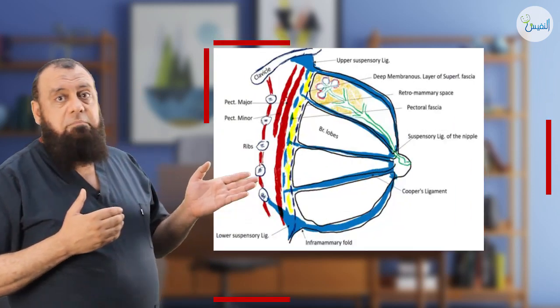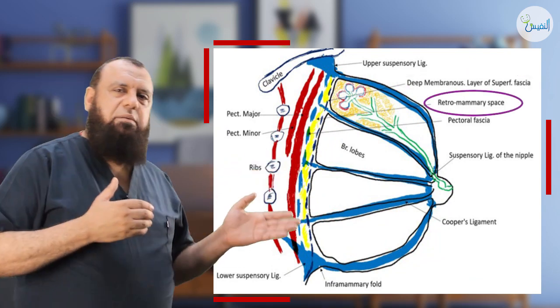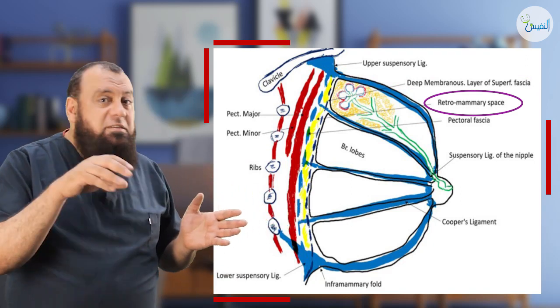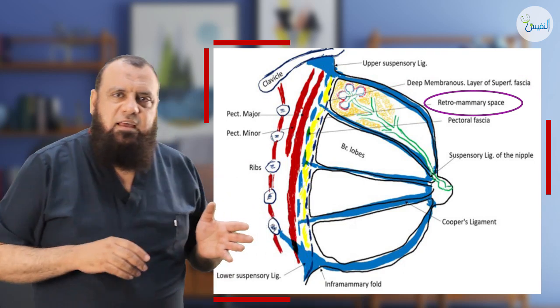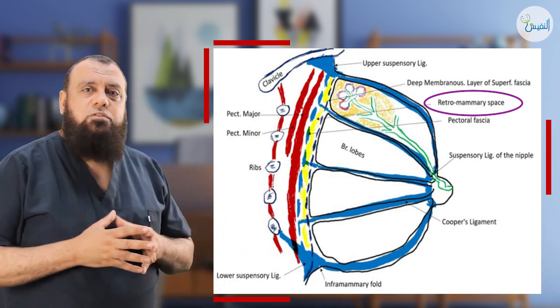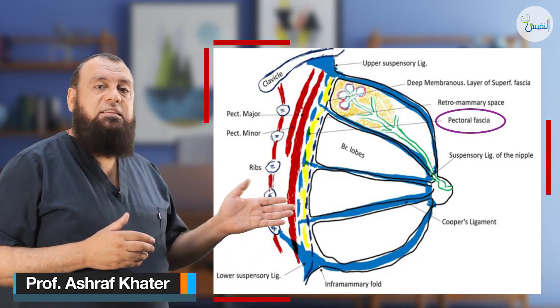Lastly, speaking about the retromammary structures. Behind the breast, there is number one, the deep membranous layer of the superficial fascia, then what we call the retromammary space — a space over which the breast slides over the deeper structures, because it is moving within the retromammary space. This space contains very important lymphatics. Then the pectoral fascia and pectoral muscles, and lastly the ribs. And by this, we come to the end of this episode. See you in the next episode, inshallah. Wassalamu alaykum wa rahmatullahi wa barakatuh.